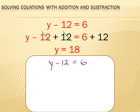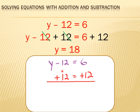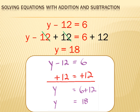Our original equation is y minus 12 equals 6, and we want to get rid of that minus 12, so we add 12. If we add 12 to the left side of the equation, we have to add 12 to the right side of the equation. The minus 12 and plus 12 cancel each other out, leaving just y on the left side. The right side is 6 plus 12, and 6 plus 12 equals 18. So again, it solves to y equals 18.